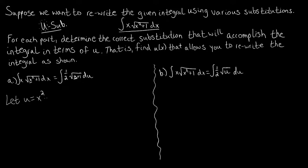Whenever we're looking for a u, we're going to look for arguments of trig functions, radicands, powers, or if we have e to some power, we're going to use that power as our u. The inner function of a composition of functions is usually what we're looking for — that's what we did here by picking u as the piece inside the square root function.